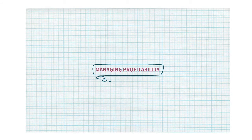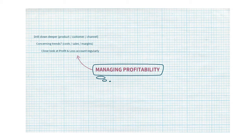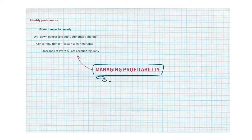Let's now look at managing profitability. In terms of financial information, this involves a close look at the profit and loss account of your business on a regular basis, identifying any concerning patterns or trends — for example, costs escalating, sales falling, or margins being eroded. Drilling down deeper to see profitability by product line, by customer, and by division or channel, and then making changes accordingly. From this discipline it's possible to identify potential problems before they get out of hand, and make changes to stop them impacting on the annual performance of the business.